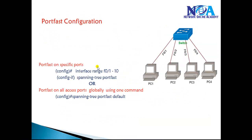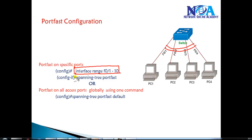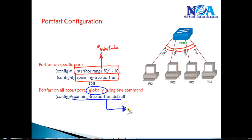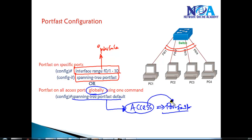This way we can save the 30-second downtime initially on access ports. To enable PortFast on access ports, we can go to a specific interface and enable it using a range command for multiple ports with the command 'spanning-tree portfast'. Alternatively, we can enable it globally using the command 'spanning-tree portfast default'. Enabling PortFast globally in global configuration mode will automatically enable the PortFast feature on each and every access port, while trunk links will not be configured as PortFast ports.